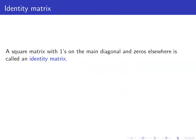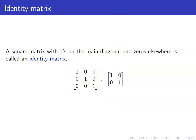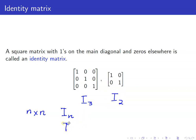Let us take a look at another special matrix: the identity matrix. The identity matrix is simply a square matrix with 1s on the main diagonal and 0s elsewhere. Here are some examples of identity matrices. We denote this identity matrix by I₃ and this one by I₂. In general, if you have a square matrix of size n by n, then the identity matrix is denoted by Iₙ; however, if you do not need to denote the size, we simply write it as I.